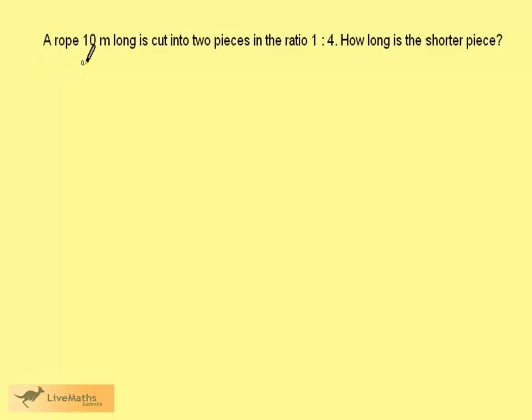A rope 10 metres long is cut into two pieces in the ratio 1 to 4. How long is the shorter piece?